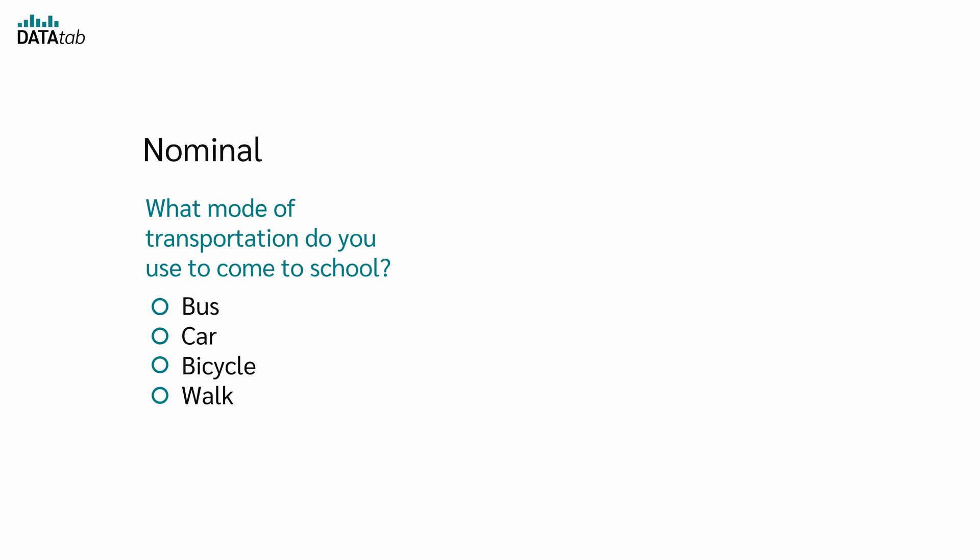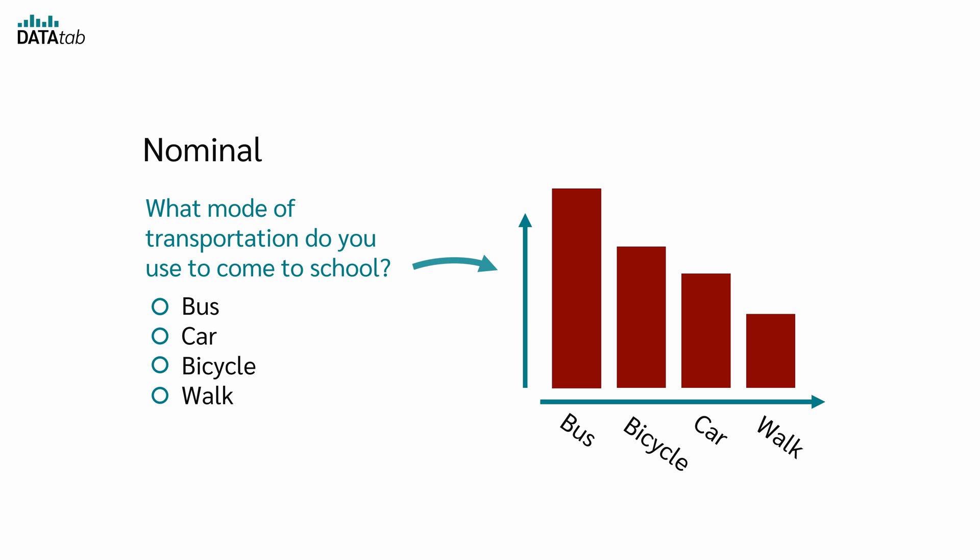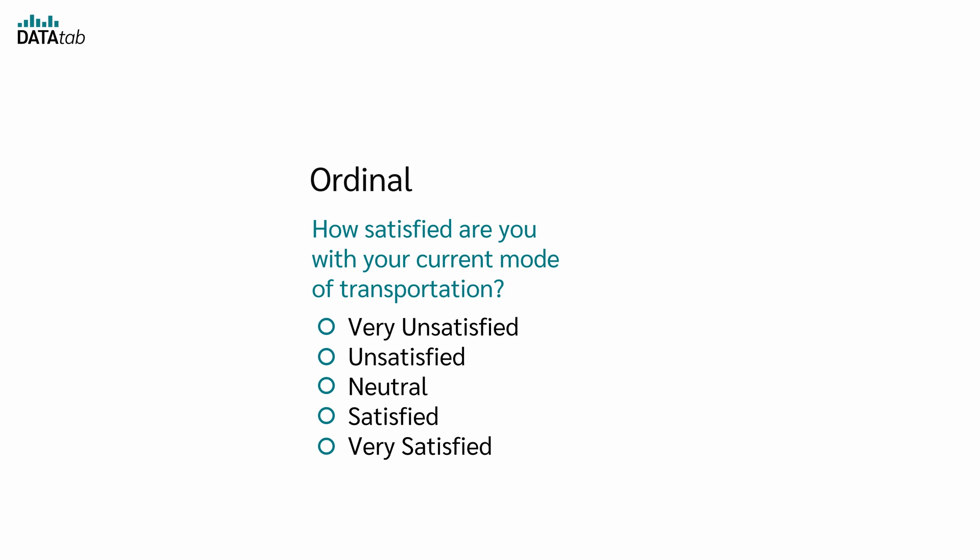If you want to analyze the results of this question, you can count how many students use each mode of transportation and present it in a bar chart. Further, you can ask, how satisfied are you with your current mode of transportation? Choices might include very unsatisfied, unsatisfied, neutral, satisfied, very satisfied. This is, of course, an ordinal variable. You can rank the responses to see which mode of transportation ranks higher in satisfaction. But the exact difference between satisfied and very satisfied, for example, or other options isn't quantifiable.